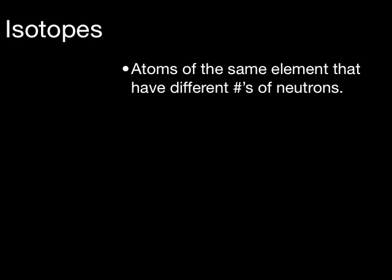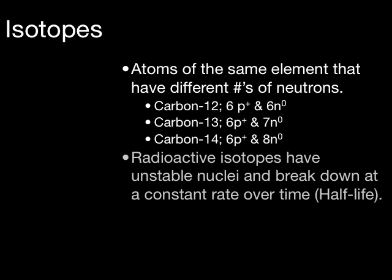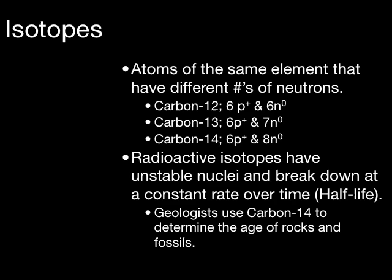Isotopes are atoms of the same element that have different numbers of neutrons. If you look up carbon on your periodic table, you'll see that it has an atomic mass of about 12, because most carbon atoms have 6 protons and 6 neutrons. However, carbon can also have 6 protons and 7 neutrons, giving it an atomic mass of 13, or 6 protons and 8 neutrons, giving it an atomic mass of 14. All three of these isotopes are still carbon because they have 6 protons, but they are isotopes because they all have different numbers of neutrons.